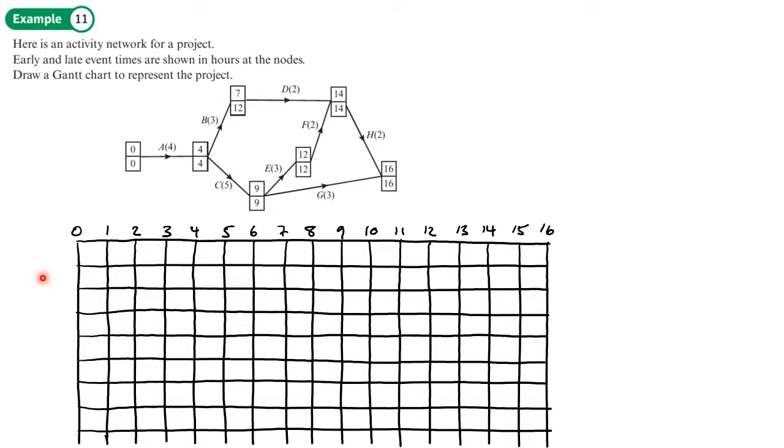First thing to do is to identify my critical activities, because I'm going to draw them in one block in this row here. So this will be my critical activities. We want to identify what the critical events are, and then we want to pick those that have a float of zero. My critical activities, or critical events, are the ones where we've got the same numbers in both boxes. So A is a critical activity, because the difference between those is four. So we'll just highlight that.